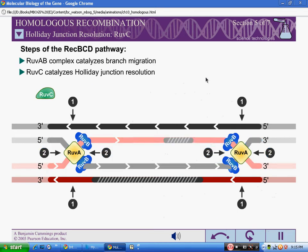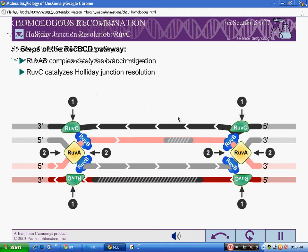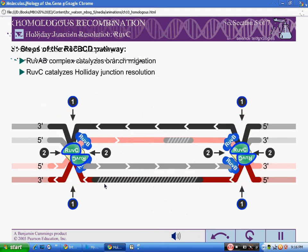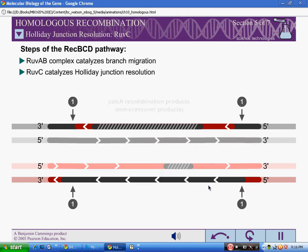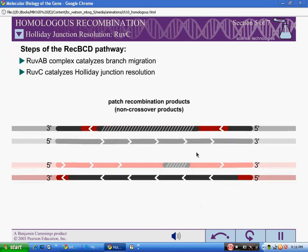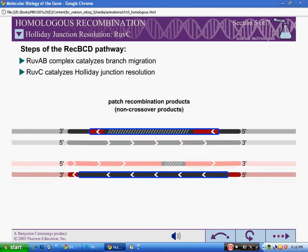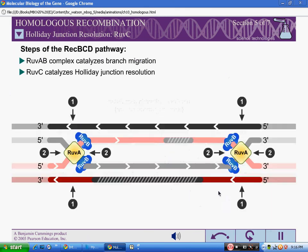If both junctions are cleaved in the same way, patch recombination products result. For example, if both junctions are cleaved at site 1, patch recombination products result. Patch recombination products also result if both junctions are cleaved at site 2.